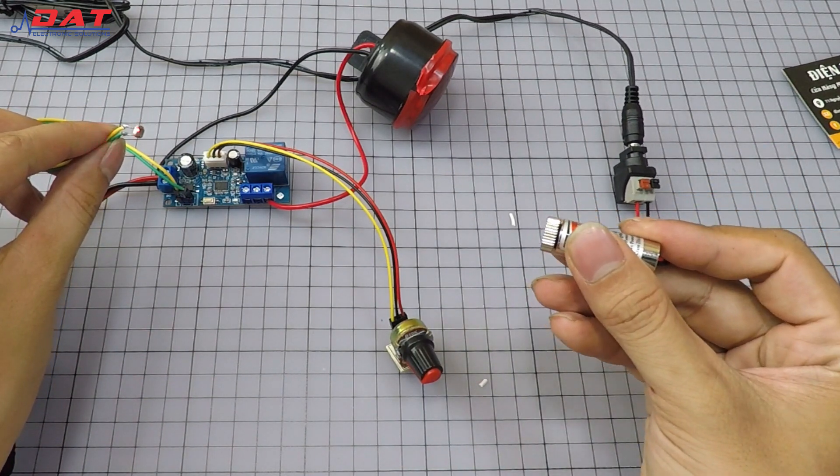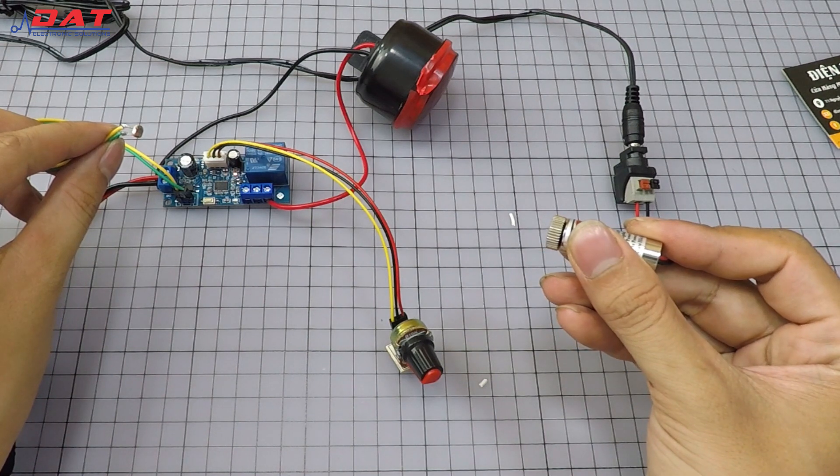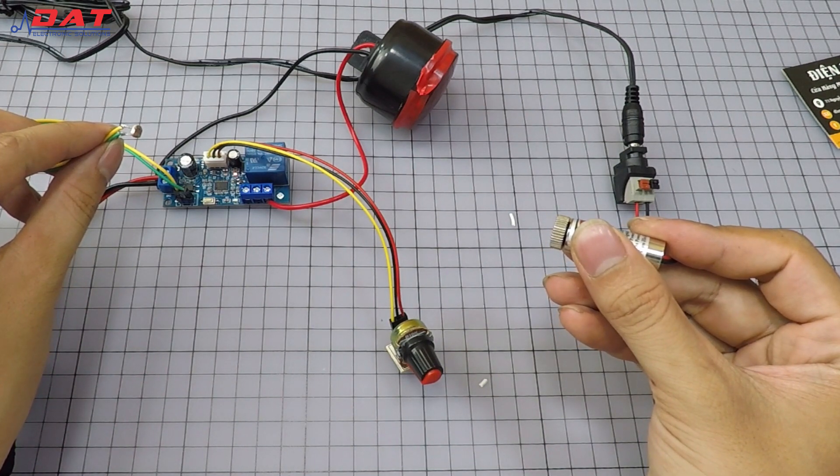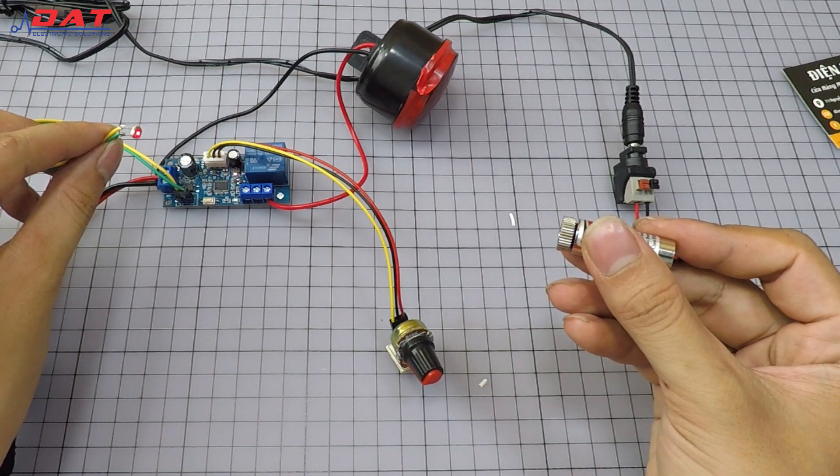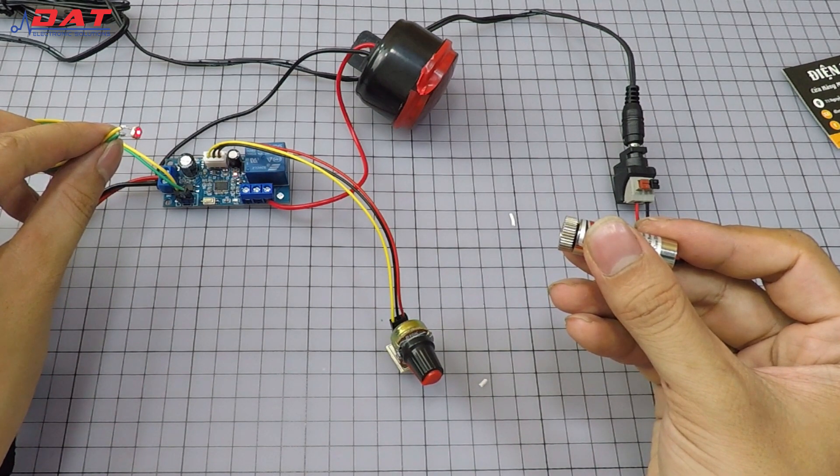The duration can be adjusted using the potentiometer on the circuit. The maximum time we can adjust is 60 seconds. The alarm will sound continuously until the time we set has elapsed.